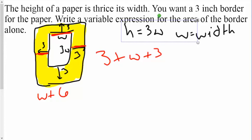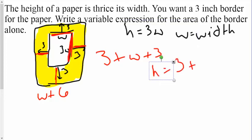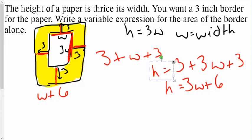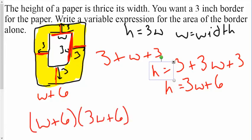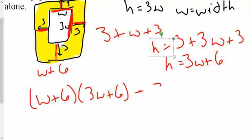Because I've added three to either side — if it were four on either side, it would be w plus 8; I'm just adding the border twice. The same thing happens for the height: 3 plus 3w plus 3, so 3w plus 6 equals the height. To find the area of a rectangle I do length times height, so it's (w + 6)(3w + 6), and from that I subtract 3w times w, which is the interior part, leaving just the border.